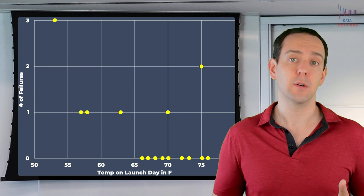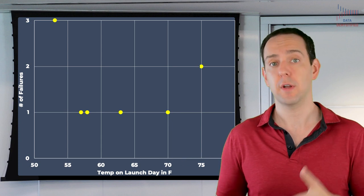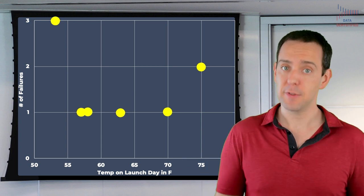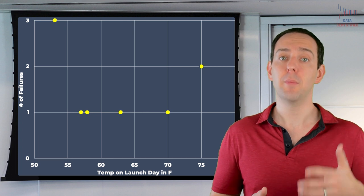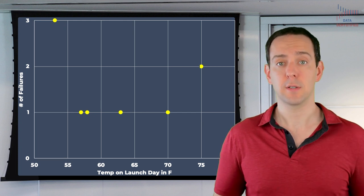This is just like the Challenger data, where we ignore the launches with no failure and conclude, based on just some of the data, that temperature has no bearing on whether O-rings fail or not. Had the engineers looked at the totality of the data, they likely would have come to a very different conclusion about the safety of the Challenger mission. They might have chosen to delay the launch to wait for warmer weather.